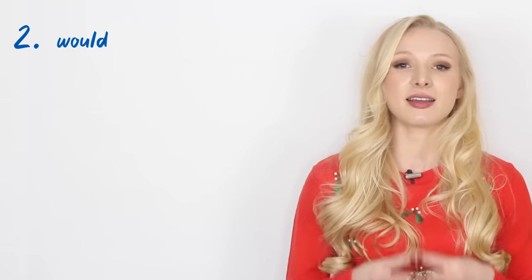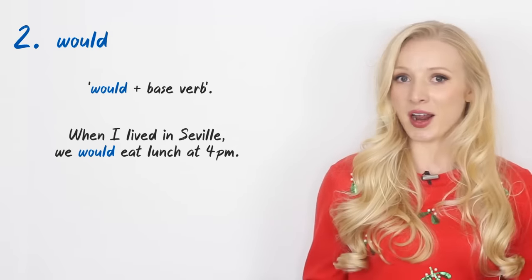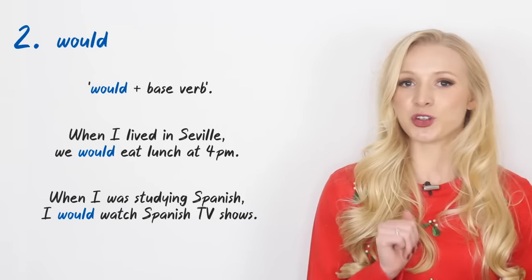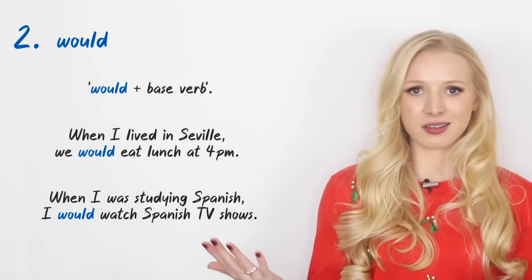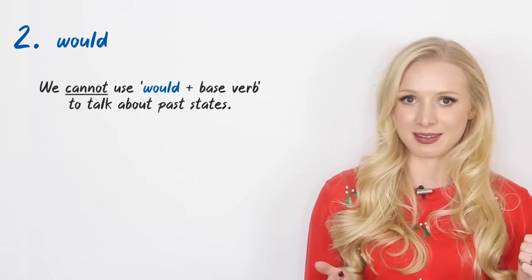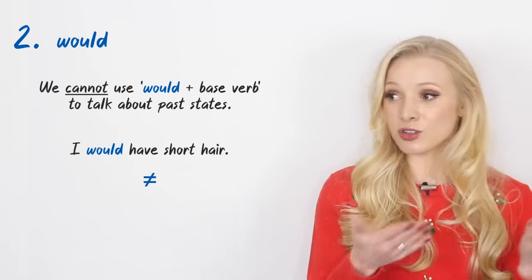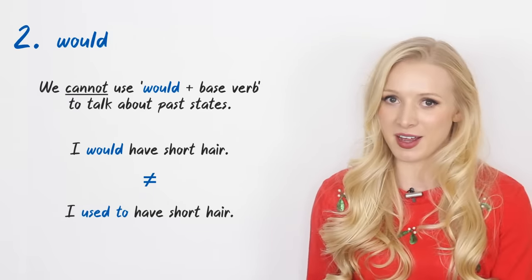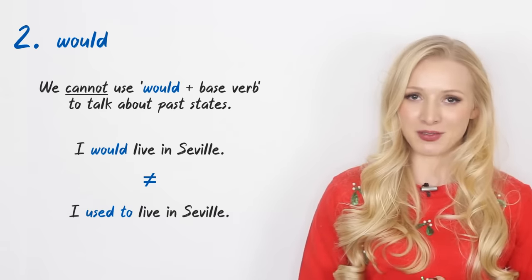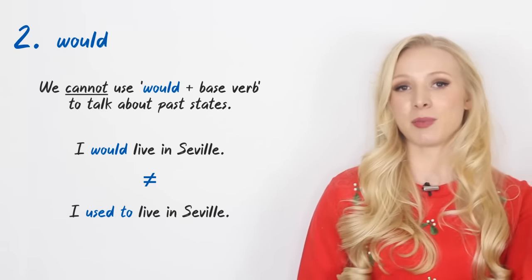Now it's time to talk about 'would'. When somebody is telling a story about the past, you might hear them use 'would' plus the base verb. For example: 'When I lived in Seville, we would eat lunch at 4 p.m.' 'When I was studying Spanish, I would watch Spanish TV shows.' You might think it's the same as 'used to' — but not exactly. We can't use 'would' plus base verb to talk about past states, only past habits. 'I would have short hair' does not mean the same as 'I used to have short hair.' So remember: 'would' plus base verb is only for past habits or repeated actions.